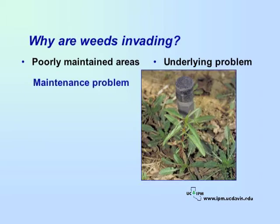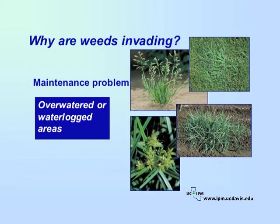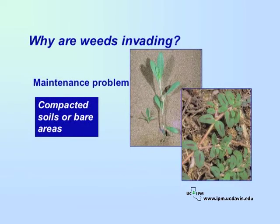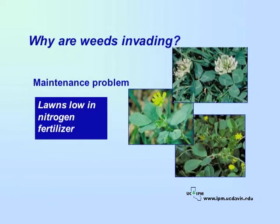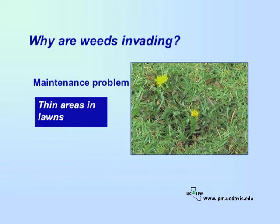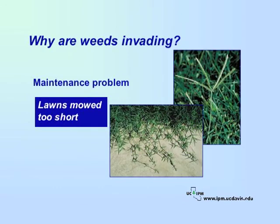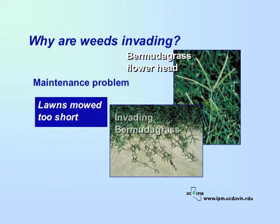Here are some maintenance problems and weeds that commonly result from them. Areas that are over-watered or waterlogged can become infested with weeds such as annual bluegrass, crabgrass, or nutsedge. Compacted soils or bare areas are often infested with knotweed or spotted spurge. Lawns low in nitrogen fertilizer are susceptible to weeds such as clovers, burr clovers, and black medic. Thin areas in lawns are susceptible to dandelion invasions. Lawns mowed too short are susceptible to Bermuda grass invasions.